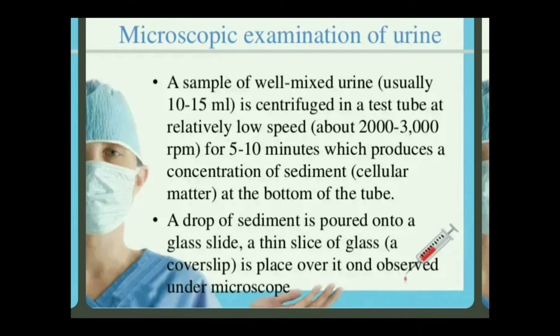After centrifugation, we discard the supernatant — the upper portion of the urine sample. We then place the sediment onto a glass slide, put a cover slip over it, and observe it under the microscope.